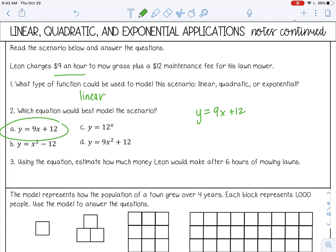And then number three, use the equation and estimate how much money Leon would make after six hours of mowing lawns. So we need to substitute 6 in for X. So 9 times 6 plus 12. That would be $66.